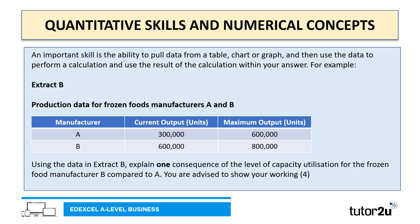A really important skill is the ability to pull data from a table, chart or graph, perform a calculation, and then use the result within your answer. For example, on screen here is extract B, which relates to production data for frozen food manufacturers A and B — showing each manufacturer's current output in units and their maximum output. An example question could be: using the data in extract B, explain one consequence of the level of capacity utilization for frozen food manufacturer B compared to A. You would need to work out the capacity utilization of both manufacturers and then explain one consequence.